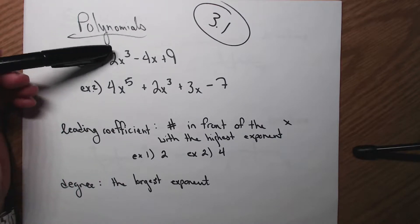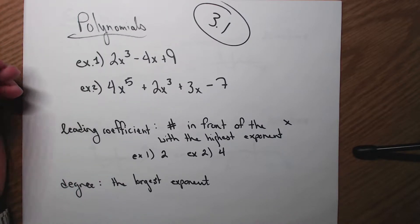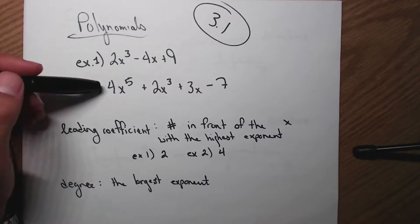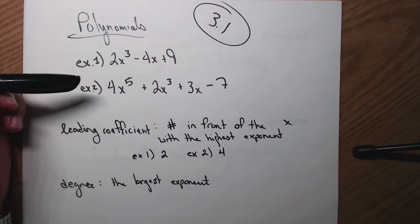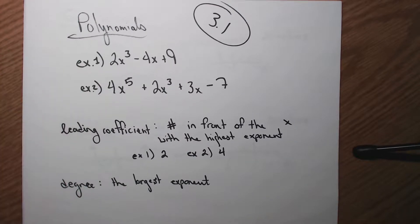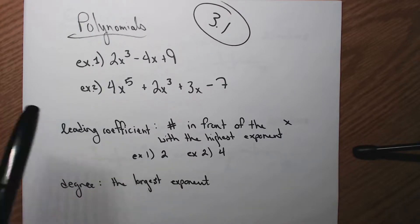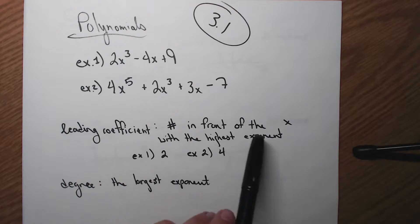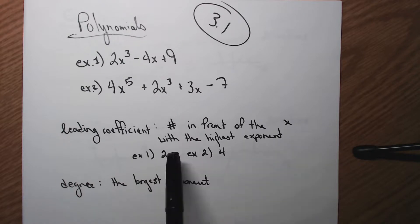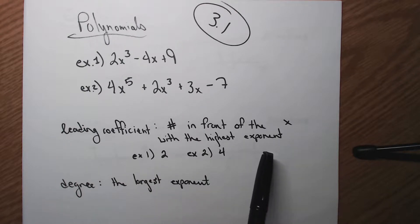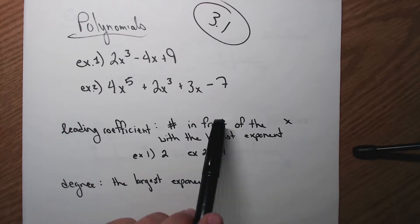So example 1: 2x cubed minus 4x plus 9, and then we've got an x squared. There are a couple of important vocabulary words — that's mostly what I have to talk to you about in this section. Leading coefficients: that's the number in front of the x with the highest exponent.